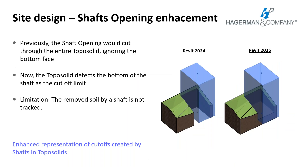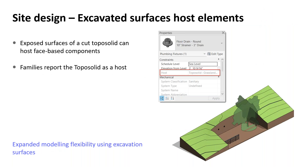In previous versions, shaft openings would cut through the entire toposolid. Now the bottom of the shaft is respected as the depth limit of the cutoff. Note that the cutoff volume by a shaft is not tracked in schedule, so you'll want to use a floor, roof, or mass excavation instead. Also, previously face-based families could not recognize faces created from Boolean operations, but in Revit 2025, the exposed surfaces of a cut toposolid can now host other elements such as railings or planting elements.